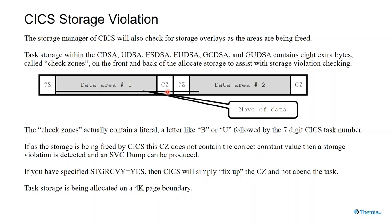The check zone is a literal. It contains the letter B, U, a 7-digit task number — actually 6 different characters for the 6 different DSAs. Because when you free the storage, or when the storage area gets freed, that is when CICS checks the check zone. If you specified storage recovery yes, the only thing CICS is going to do is fix up the check zone. Any of the data that is damaged in the middle is not going to get fixed up. Your task does not abend, and you think everything is fine when it's really not.